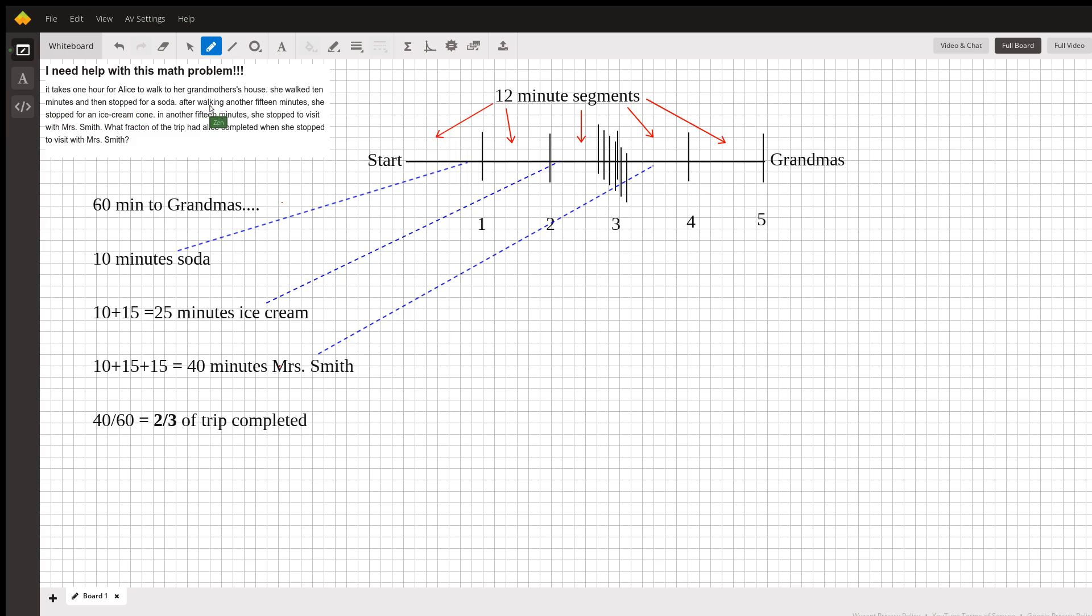It takes one hour for Alice to walk to her grandmother's house. Okay, one hour. That's 60 minutes to grandma's house. So from the start to the finish is 60 minutes. What you notice here, I've divided the journey up into five equal 12-minute segments.